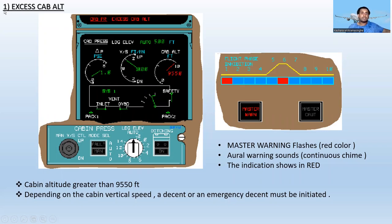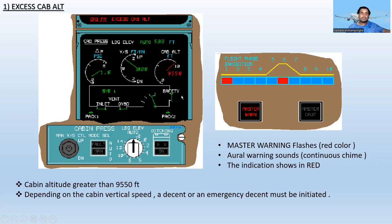The first warning is Excess Cabin Altitude. When this fault occurs, the master warning flashes — you can see the red master warning flashing — and an oral warning sounds as a continuous chime. The indication shows in red: Excess Cabin Altitude.